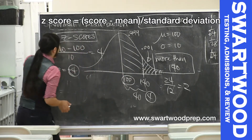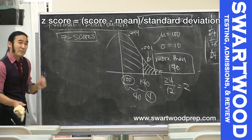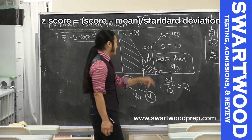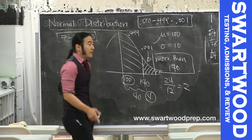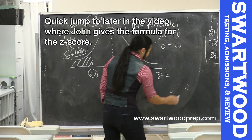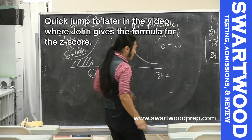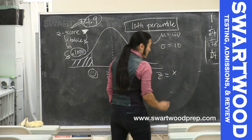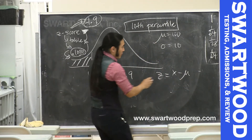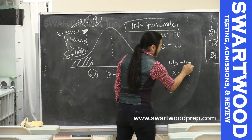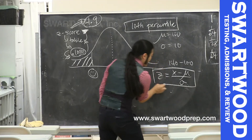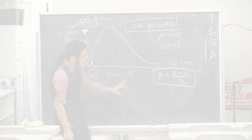The general procedure: to compute a z-score, take your score, subtract the mean, and divide by the standard deviation. For example, we took 140, subtracted the mean of 100, and divided by the standard deviation of 10 to get our z-score. That's the general formula for computing z-scores.